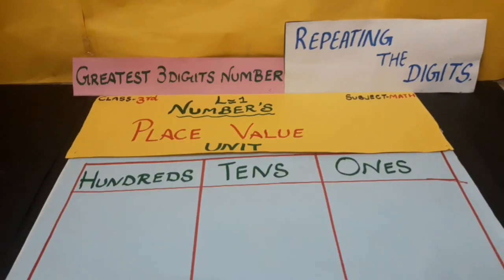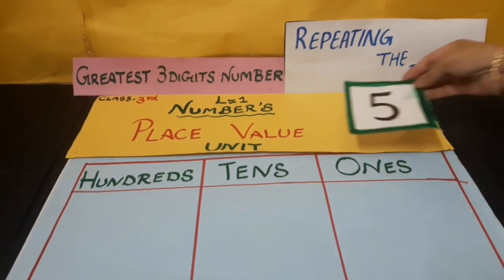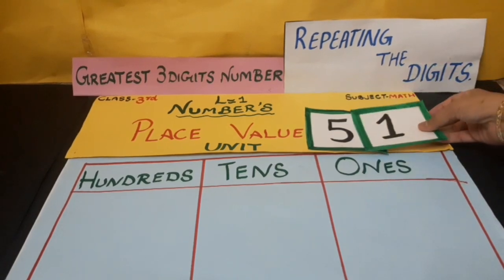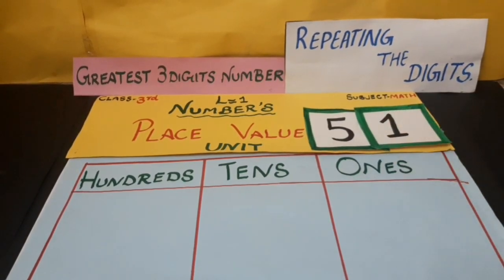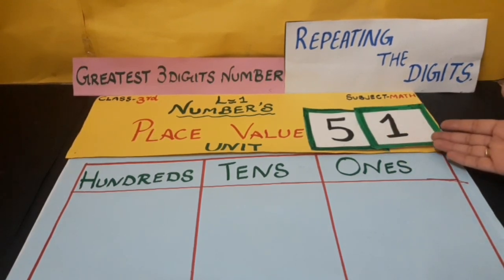Our third question is: make the greatest 3-digit number by repeating the digits. The given digits are 5 and 1. As you can see here, we have only 2 digits — that is 5 and 1.